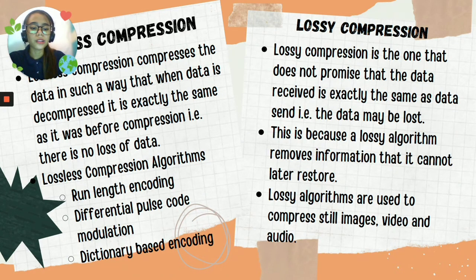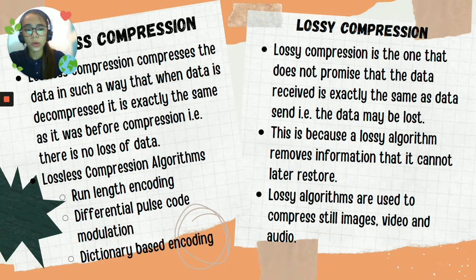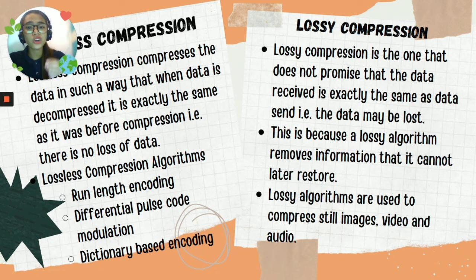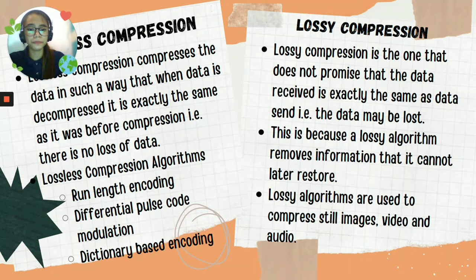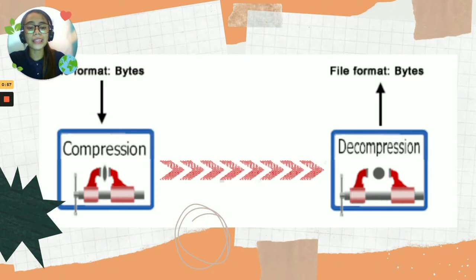Lossy algorithms are used to compress still images, videos, and audio. The difference between the two: with lossless compression, when you compress and then decompress the data, it is exactly the same — nothing is lost. With lossy compression, when you compress the data, some information is lost, so it is no longer the original data. When the sender compresses the data, the receiver decompresses it.